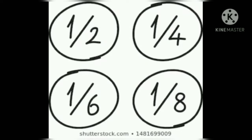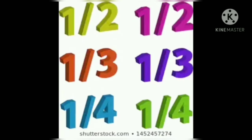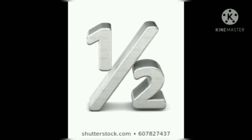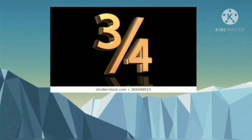So in fractions: one by two, one by four, one by eight, three by five, two by five, etc. A fraction consists of two numbers written one above the other, separated by a line. The number above the line is called the numerator and the number below the line is called the denominator.